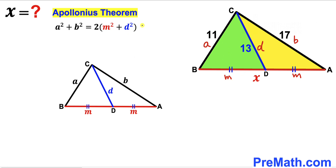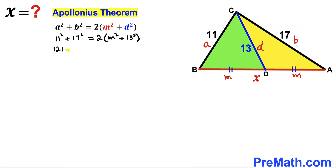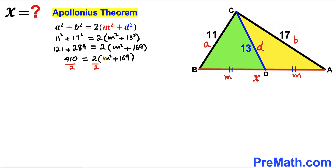Let's fill in the blanks in the Apollonius theorem. Our a value is 11, so we write 11² + 17² = 2(m² + 13²). Simplifying: 121 + 289 = 2(m² + 169). The left-hand side adds up to 410, and dividing both sides by 2 gives us m² + 169 = 205.